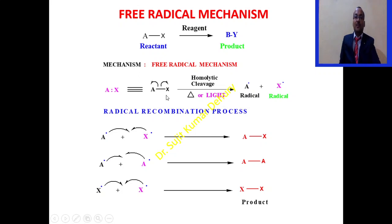Similarly, in another process when the A-X reactant, the bond cleavage in homolytic fashion. The single-headed arrow is represented, showing that in homolytic fashion each atom will get one electron each. A dot and X dot, that is called free radicals.